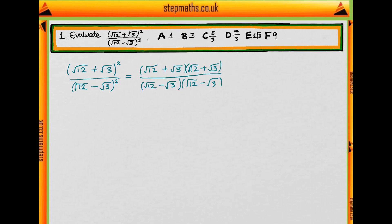We write it out like this and then we just need to multiply out the brackets. We do root 12 times root 12, which is just 12. Root 3 times root 3, which is just 3.